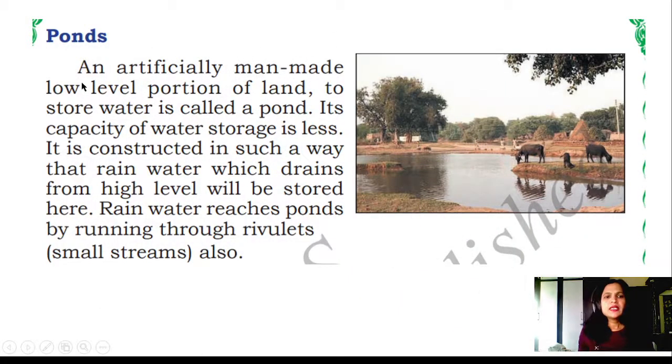Ponds: An artificially man-made low-level portion of land to store water is called a pond. Its capacity of water storage is less. It is constructed in such a way that rain water which drains from the high level will be stored here. Rain water reaches ponds by running through rivulets and small streams.